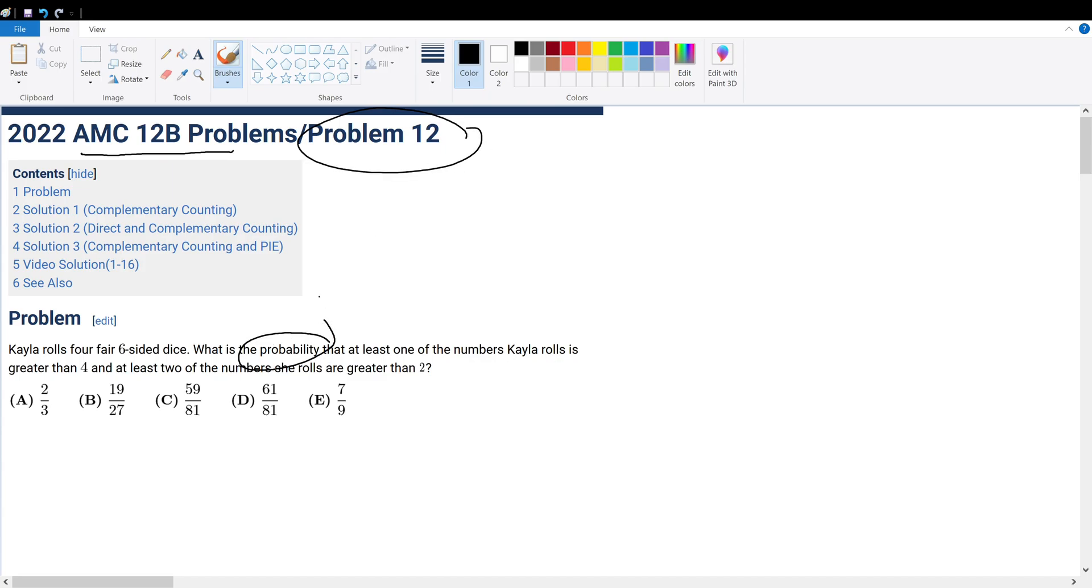Now when we see probability questions, the first thing that we should think of is complementary counting. Because when we do complementary counting, we get to consider less test cases.